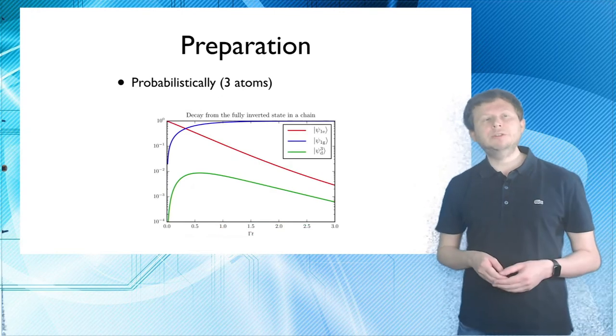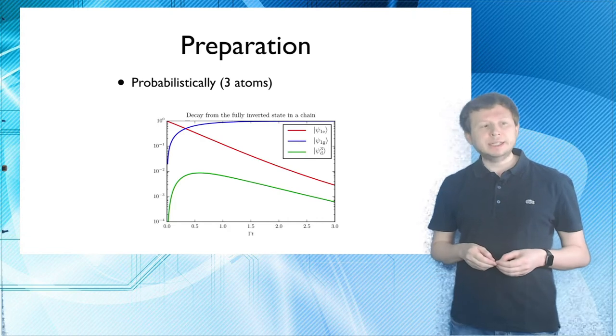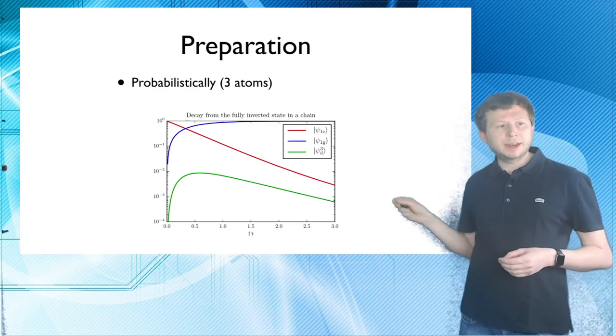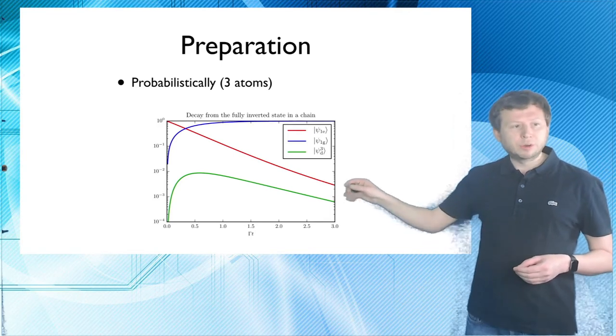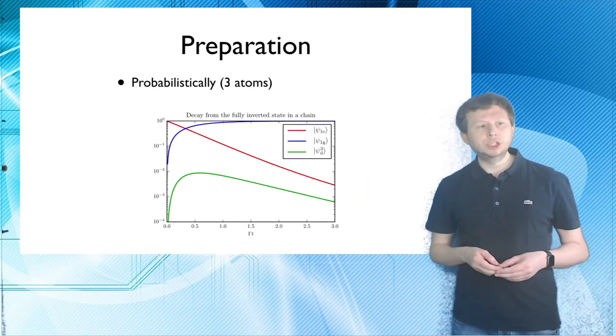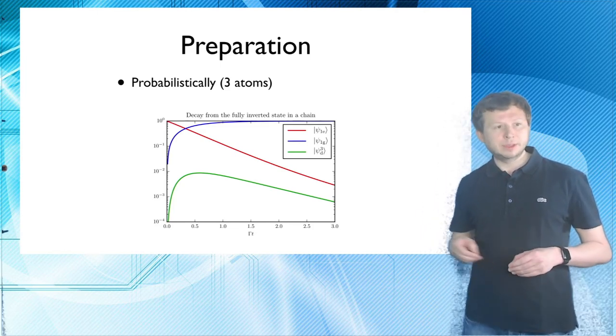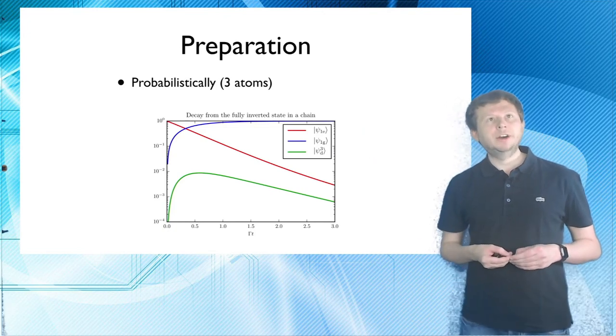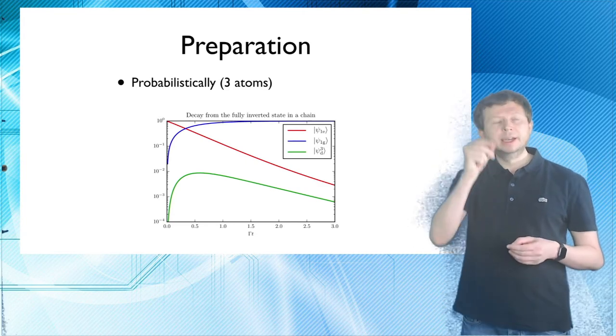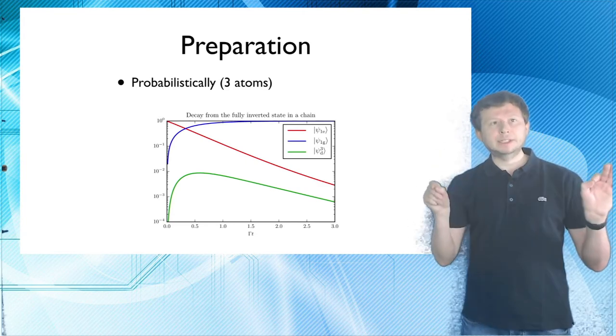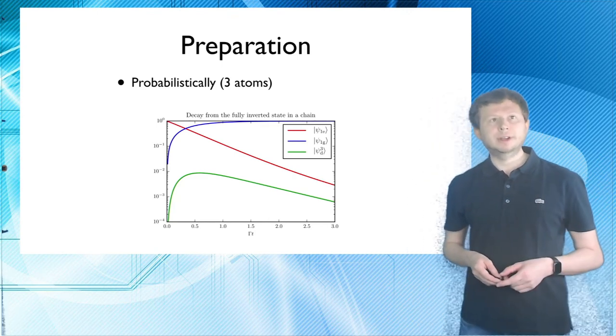And lastly, in terms of preparation, you can also start out with all the atoms, all the three atoms in this case, in the excited state and just let the dynamics do its thing. And you will end up with sort of a 1% contribution or 1% population in psi 3d and these psi 1e and psi 1g. Here we have a chain of three atoms. Here are the population in the excited and in the ground state of the middle atom of the three atoms in the chain just to sort of demonstrate the dynamics that are going on here.